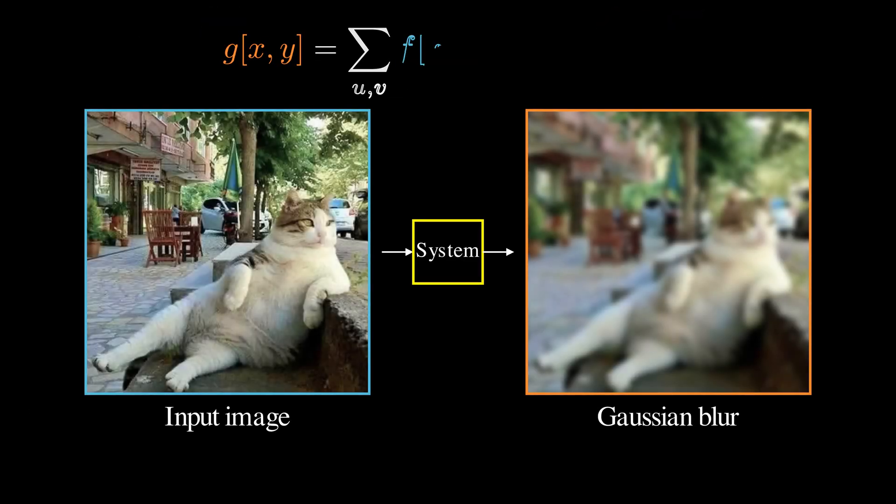Here, h is the system's impulse response. The negative sign indicates that the filtering kernel is the impulse response flipped horizontally and vertically. For blur filter, this flipping doesn't matter because they are symmetric.